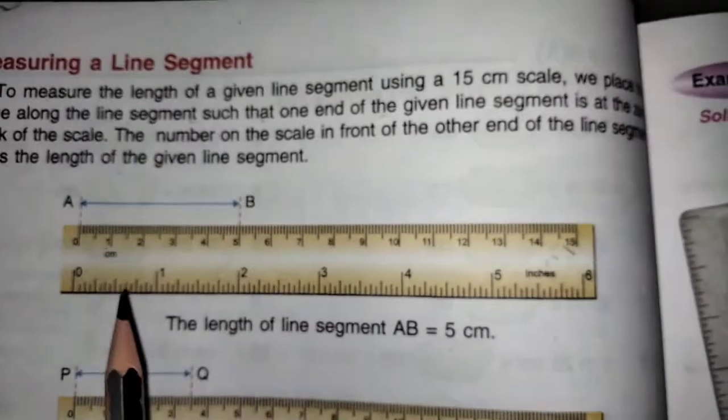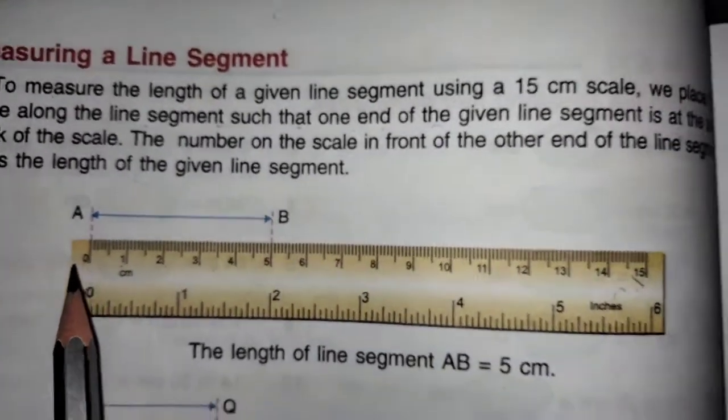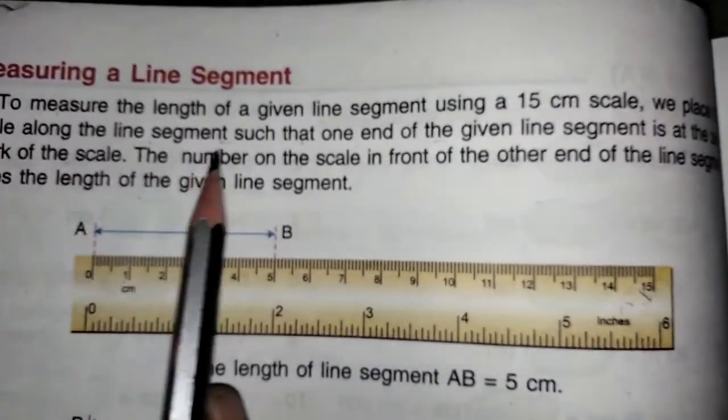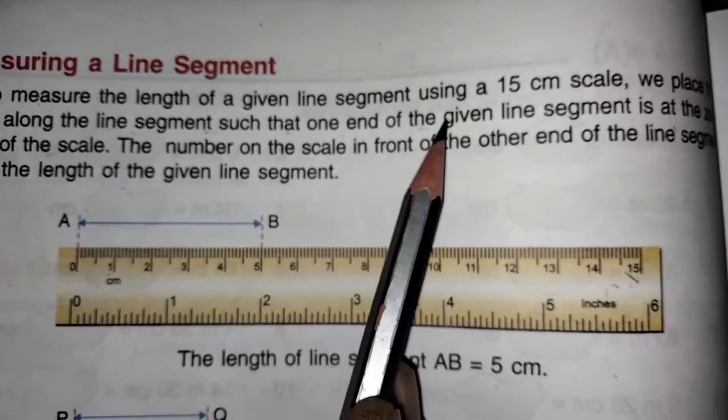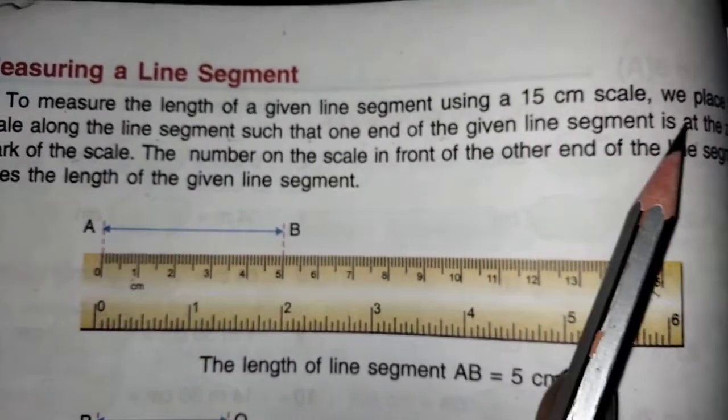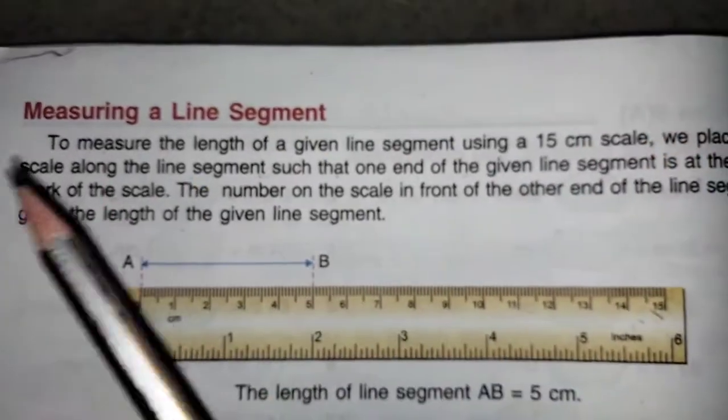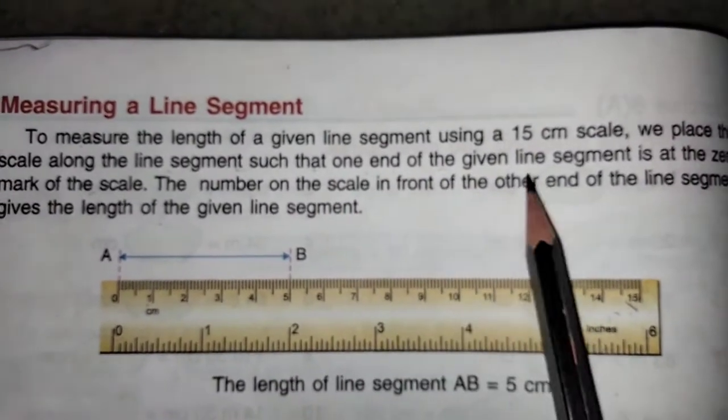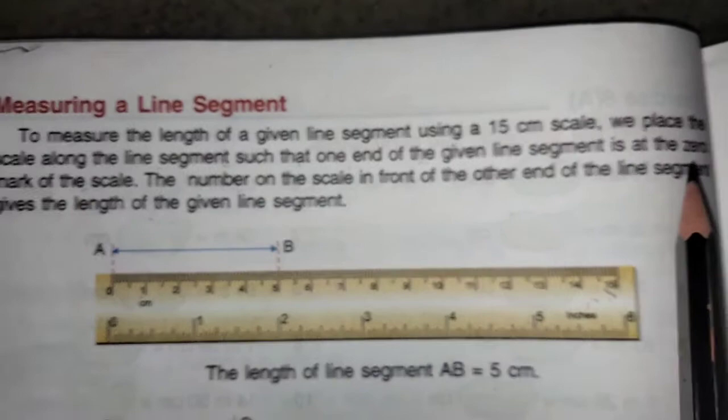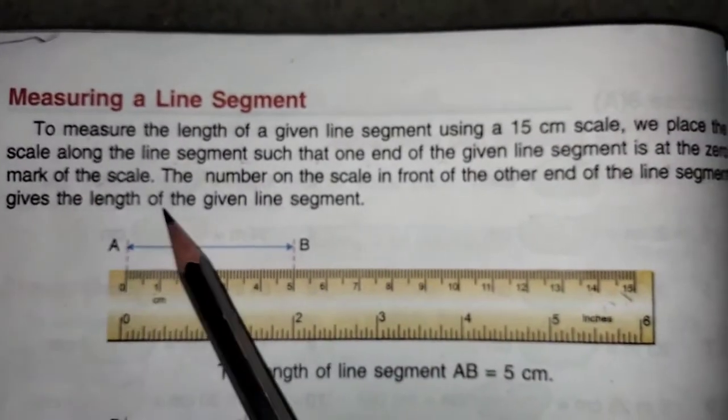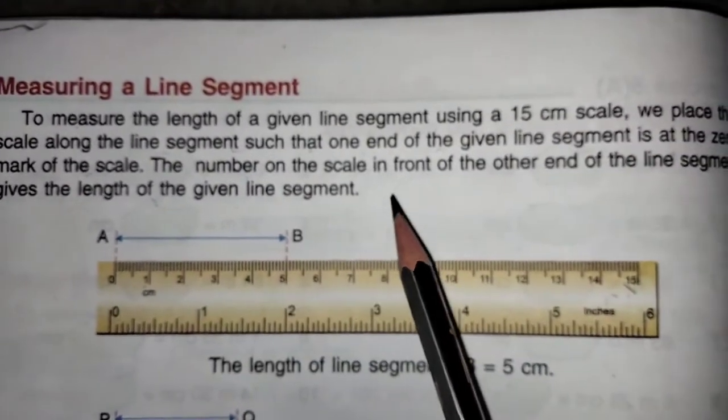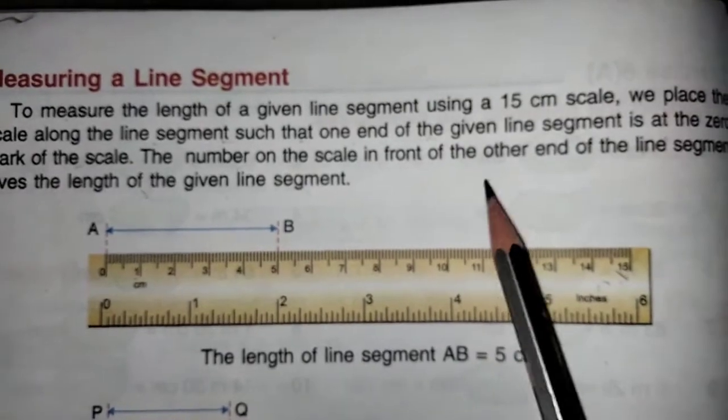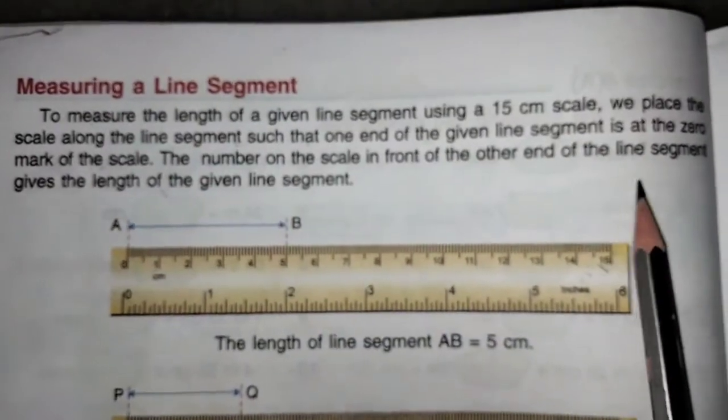How they told, you have to keep one end here. To measure the length of the given line segment using a 15 cm scale, we will place the scale along the line segment such that one end of the given line segment is at the 0 mark of the scale. The number on the scale in front of the other end of the line segment gives the length of the given line segment.